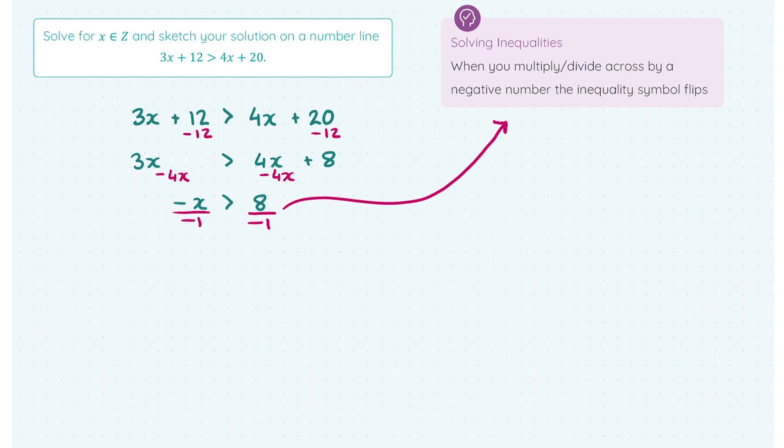We have -x ÷ -1, which gives me x. Because I've divided by a minus, the greater than symbol flips to a less than symbol. Changes direction. And then I have 8 ÷ -1, which is -8. And there I have my answer. So that's a very important rule, folks. When you divide across by that minus, flip the inequality sign.